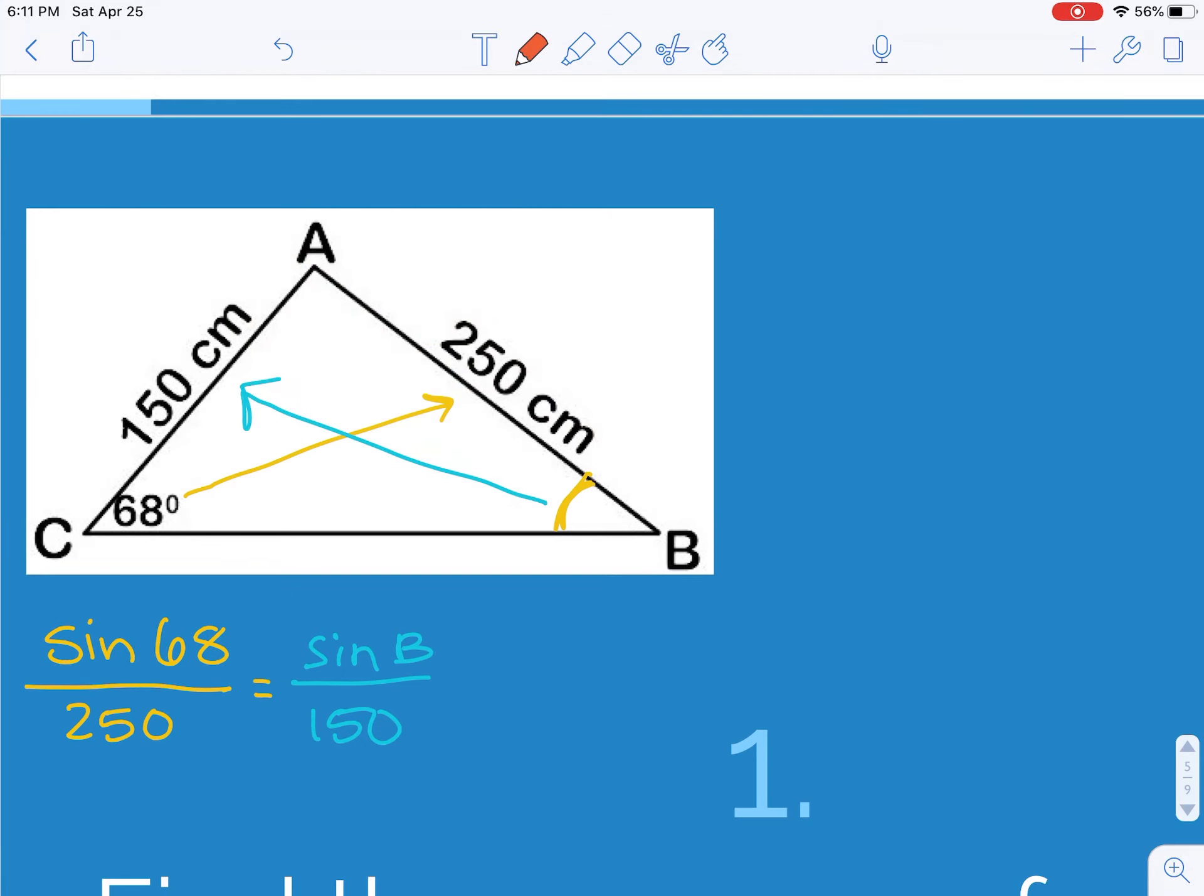I'm going to cross multiply and divide, and it is okay if you do the fish hook. So I'm doing 150 times the sine of 68, divide that by 250. And I get the sine of B equals 0.5563, and some change.